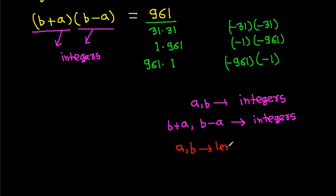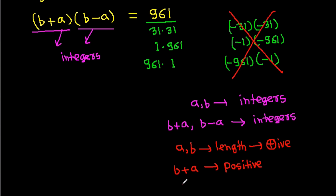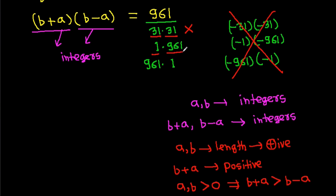Since A and B are lengths, they must be positive. So B plus A is positive, meaning B plus A cannot be negative, and B plus A will be greater than B minus A. Therefore B plus A cannot equal B minus A, so the only valid factorization is B plus A equals 961 and B minus A equals 1.